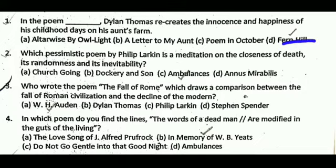Question number two: which pessimistic poem by Philip Larkin is a meditation on the closeness of death, its randomness and its inevitability? The correct answer is C, that is Ambulances.